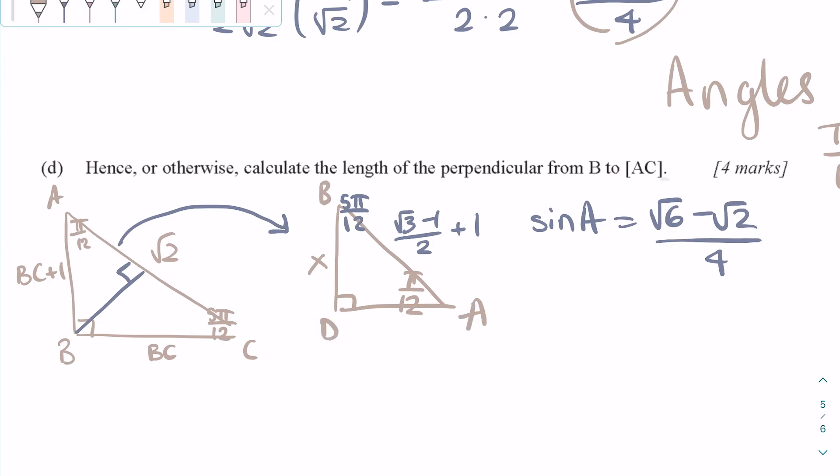Again, it is opposite over hypotenuse. So, in this case, it would be X over the square root of 3 minus 1 over 2 plus 1.